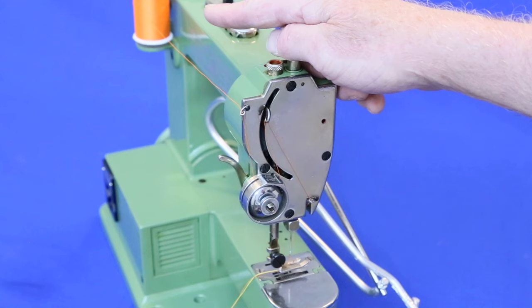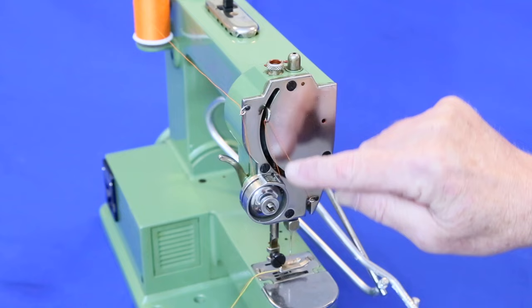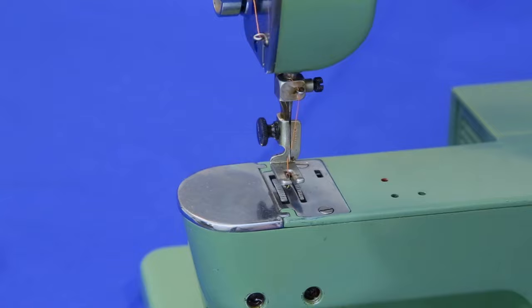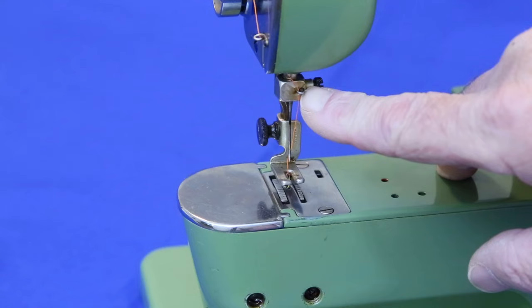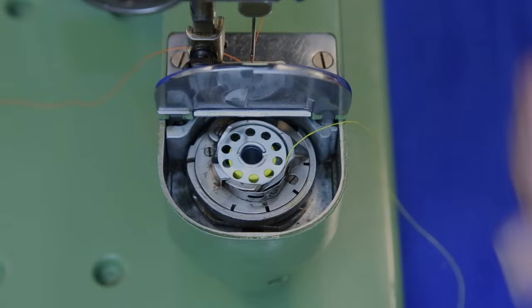To thread, bring it from the spool through this pigtail, down and around the tensioner, up to the take-up arm, and then down to this pigtail. From the last pigtail, bring it down through this thread guide and into the needle, threading it from right to left.